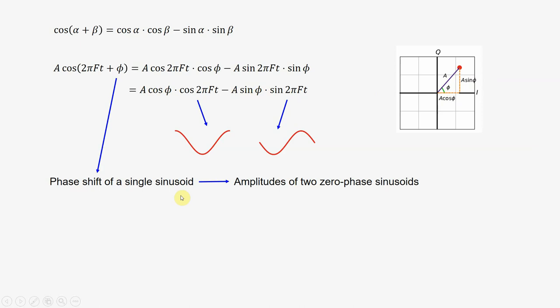This is the whole essence of IQ signals, therefore I repeat this part. We have gone from the phase shift of a single sinusoid, which is very difficult to measure or generate, to two zero phase sinusoids where the phase information is in their amplitudes now: A cos φ and A sin φ.